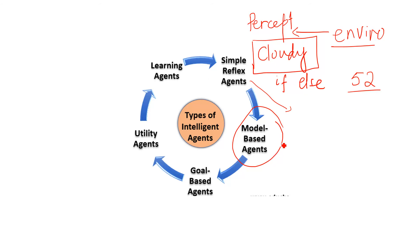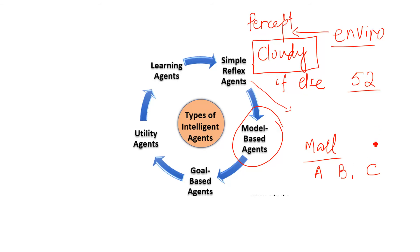Now let's look at model-based agents. In model-based agents, our environment is partially observable — meaning we do not have all information related to our environment. For example, if you go to a mall, you know brand A, brand B, and brand C are there, but you do not know how many people are coming in the morning or how many people will buy product C. Similarly, self-driving cars know where to brake and where to accelerate, but they do not know how many cars, bikes, or trucks are on the road. These are partially observable environments.